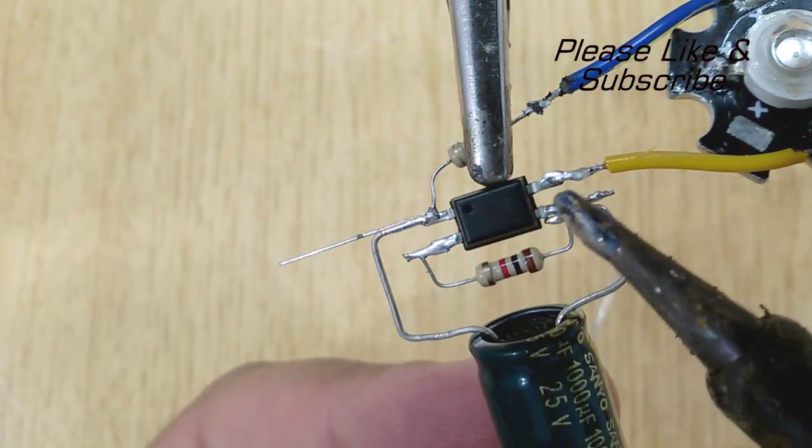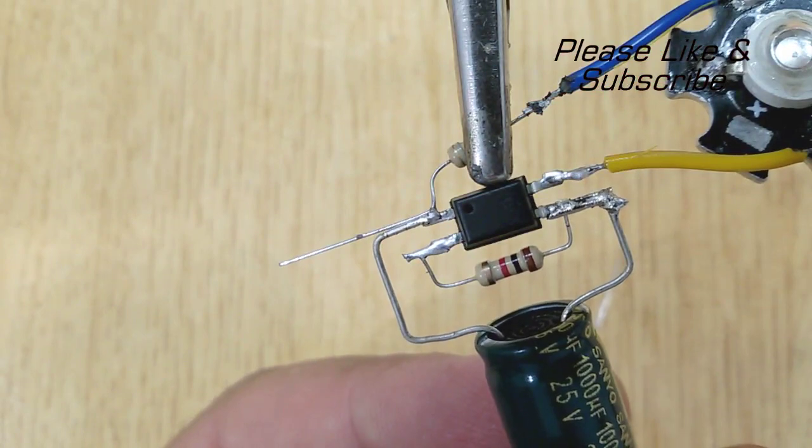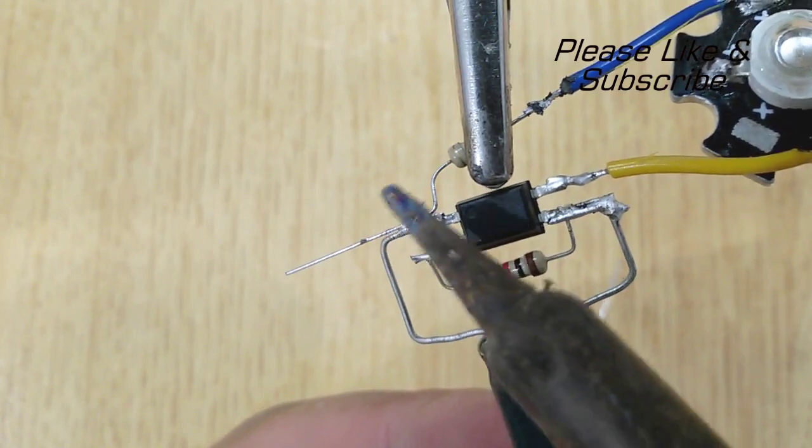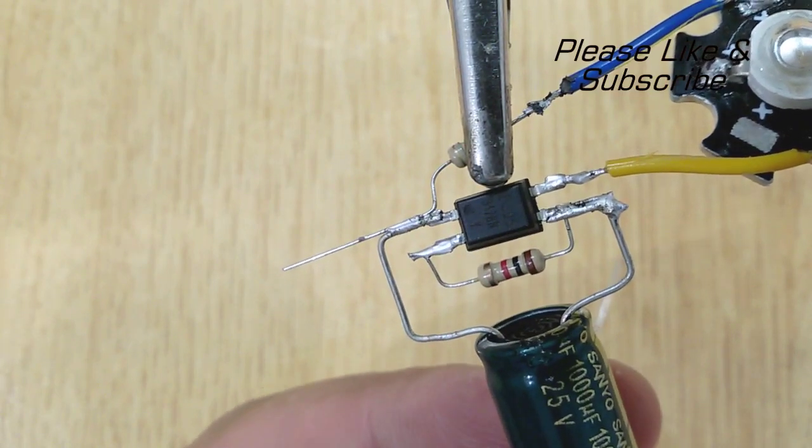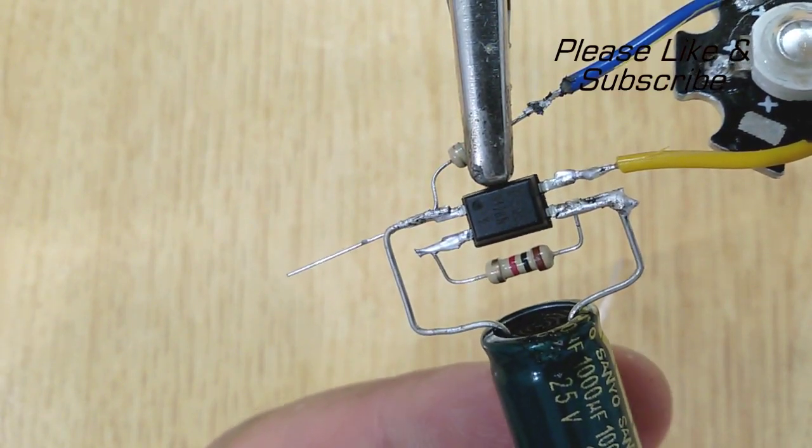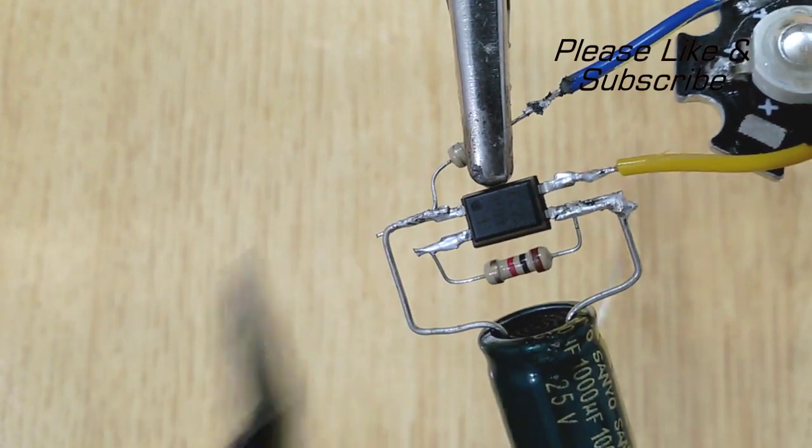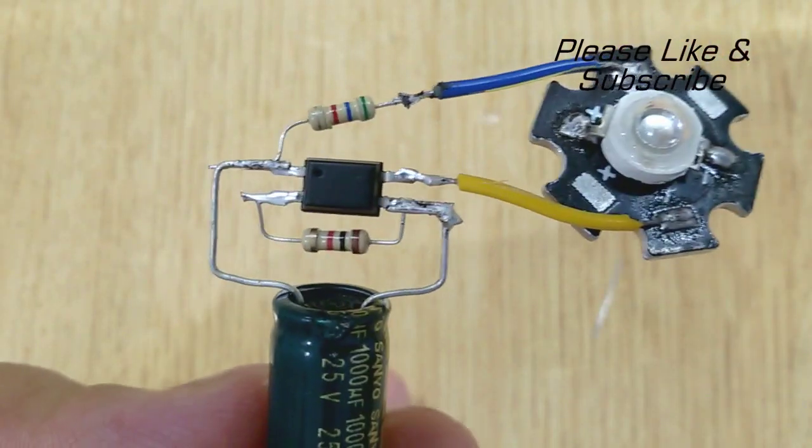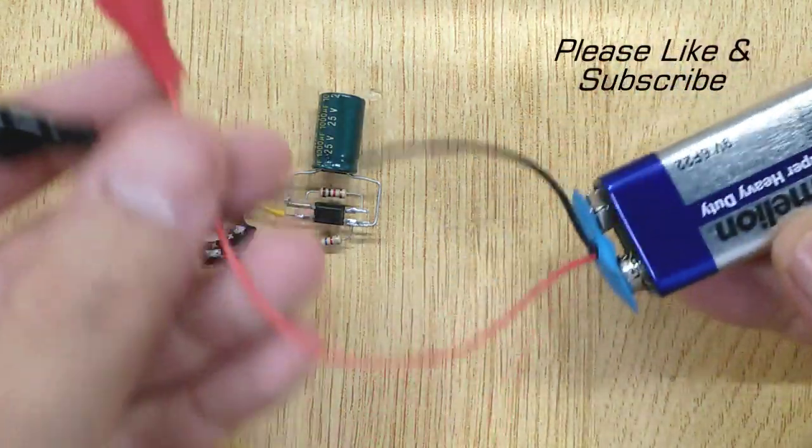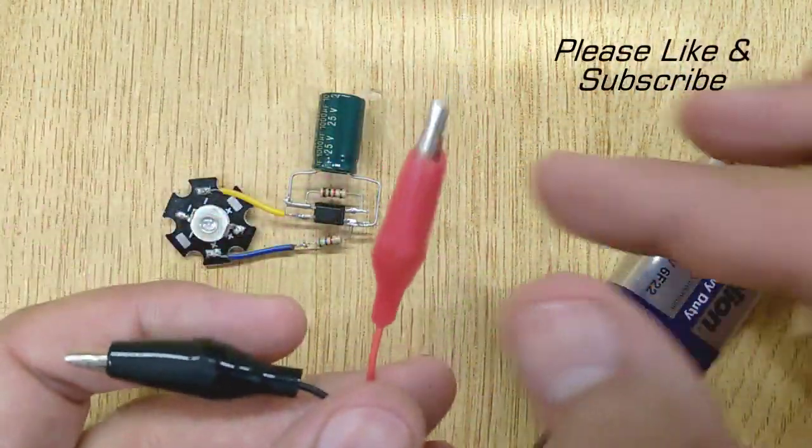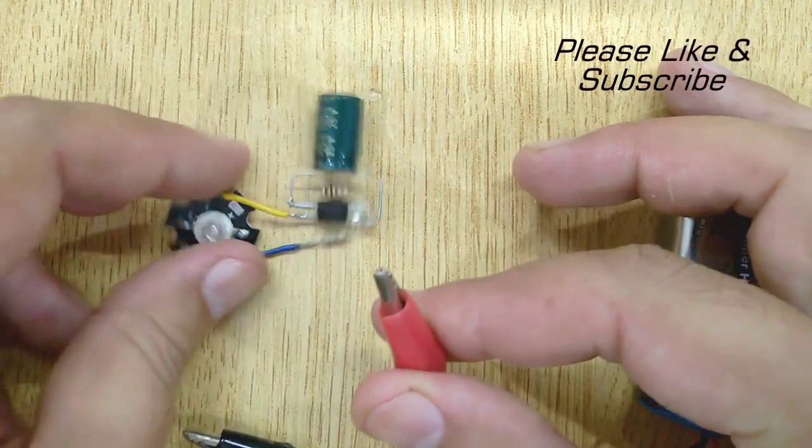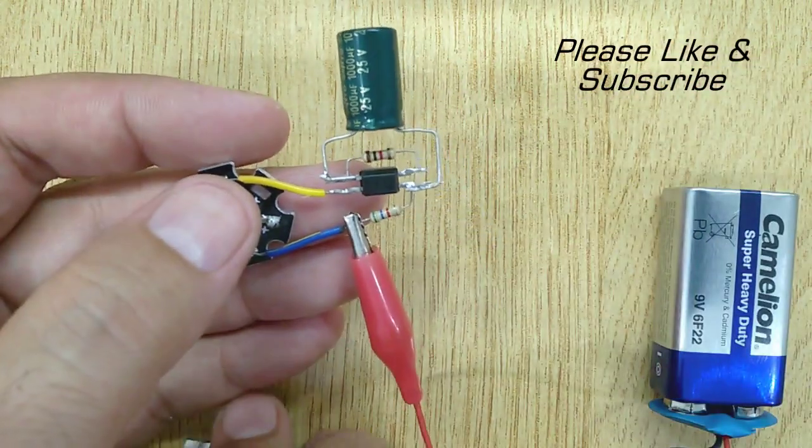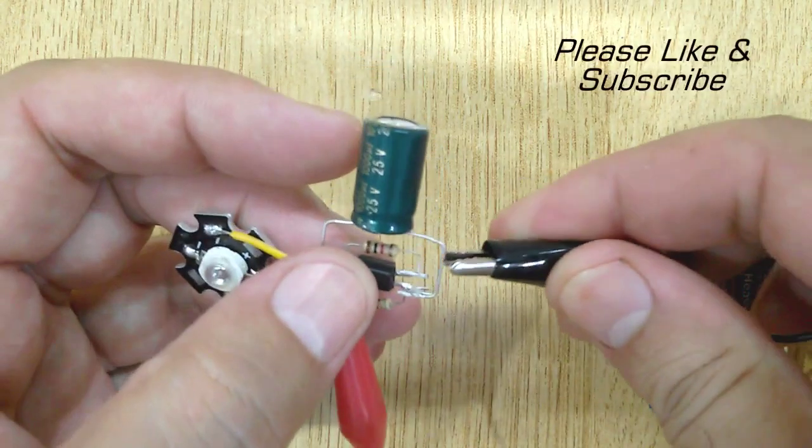And at last solder 1000 microfarad capacitor with the first and third pin of PC817. Connect the negative pin of 9 volt battery with the second pin of PC817.